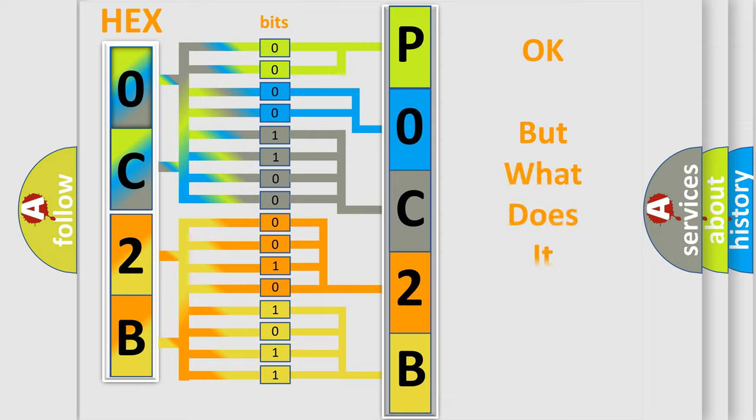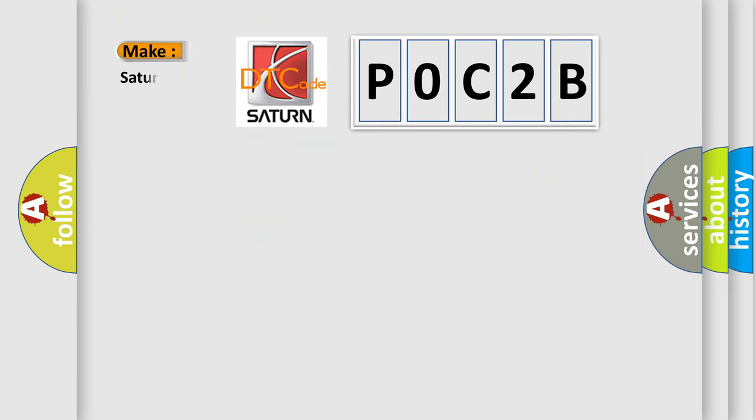The number itself does not make sense to us if we cannot assign information about what it actually expresses. So, what does the Diagnostic Trouble Code P0C2B interpret specifically for Saturn car manufacturers?